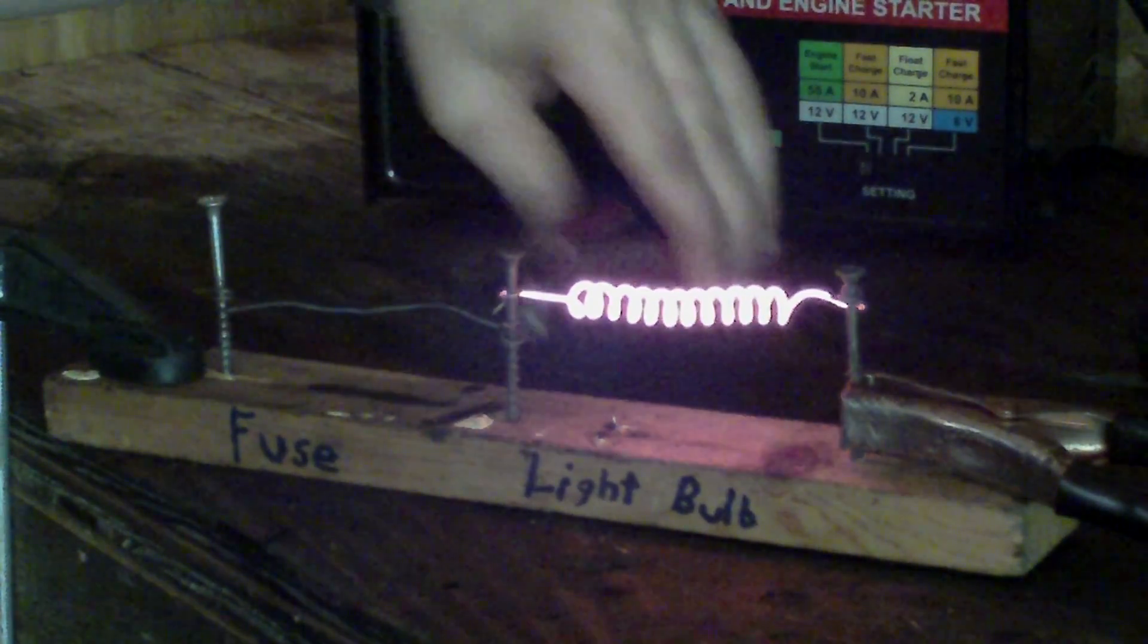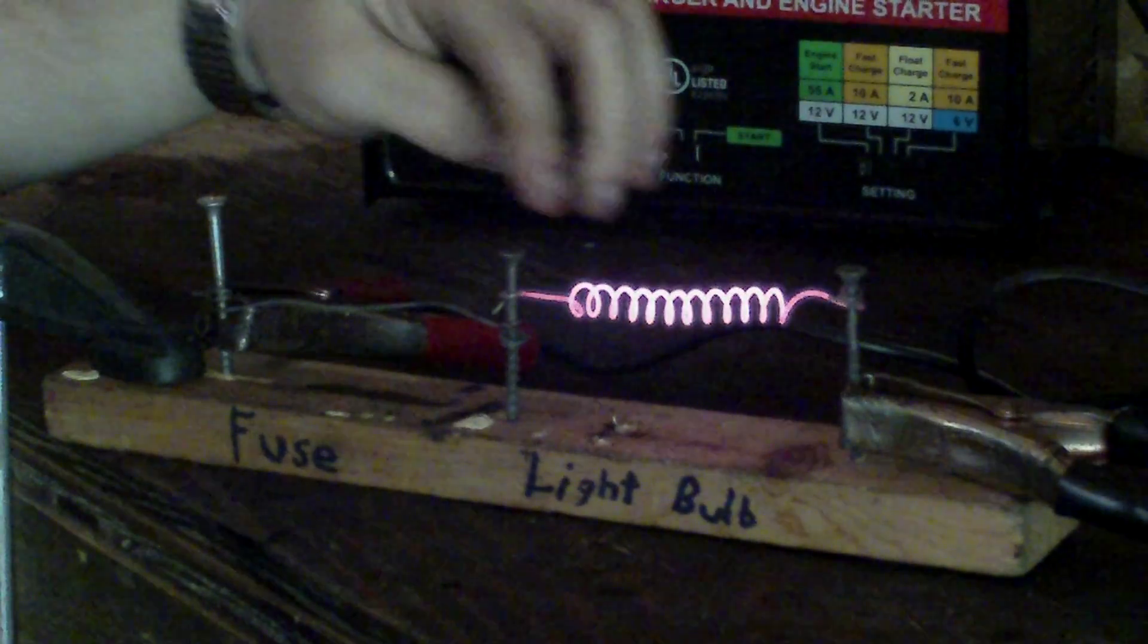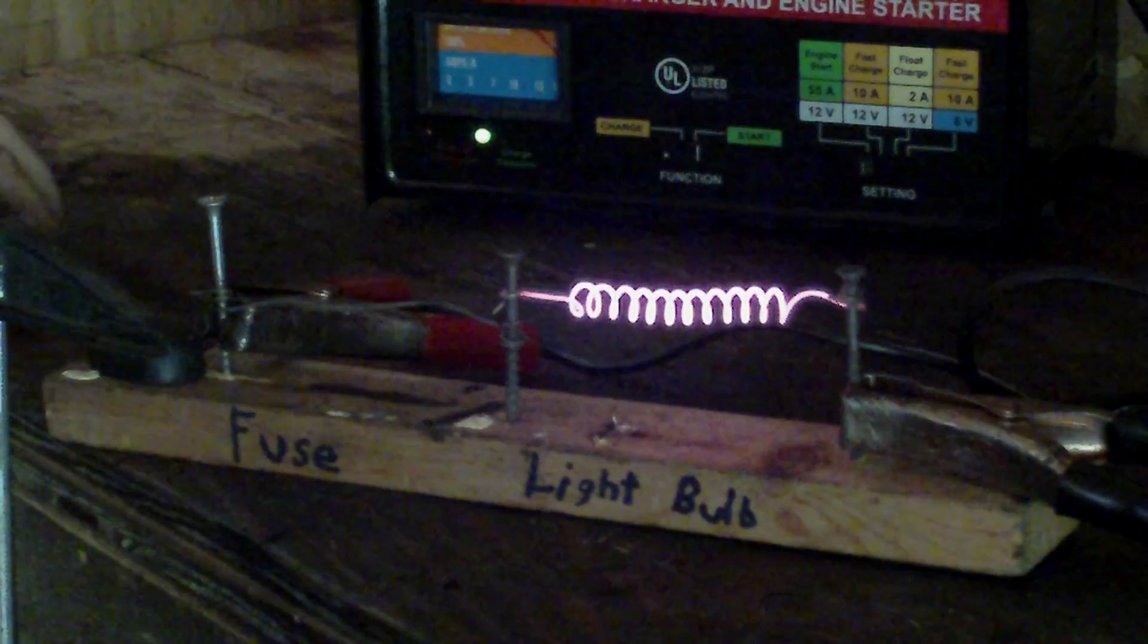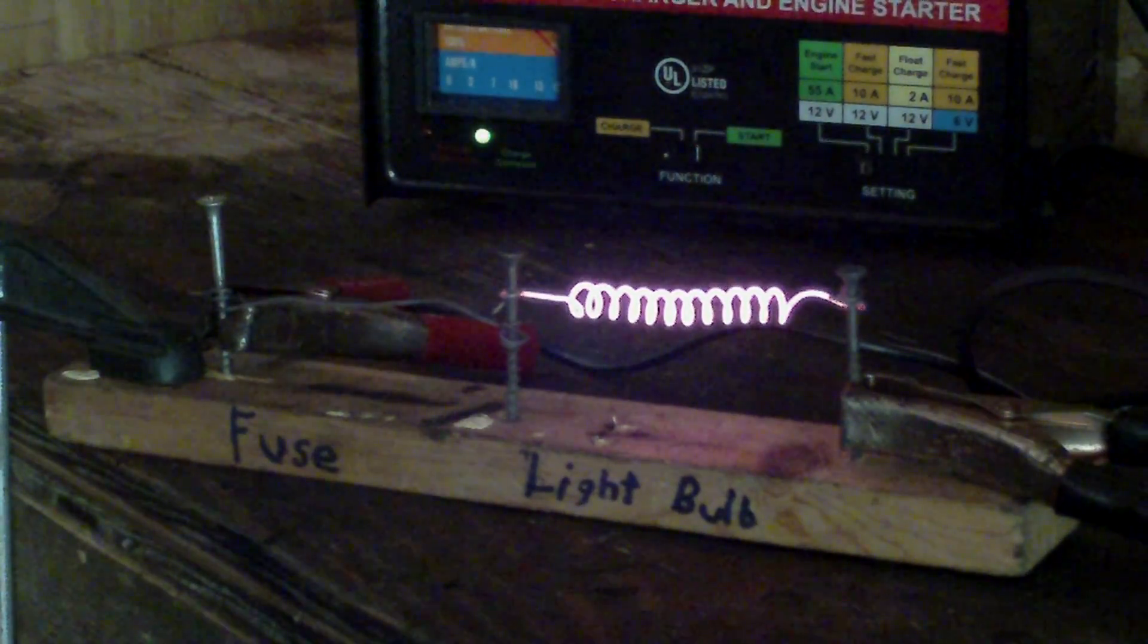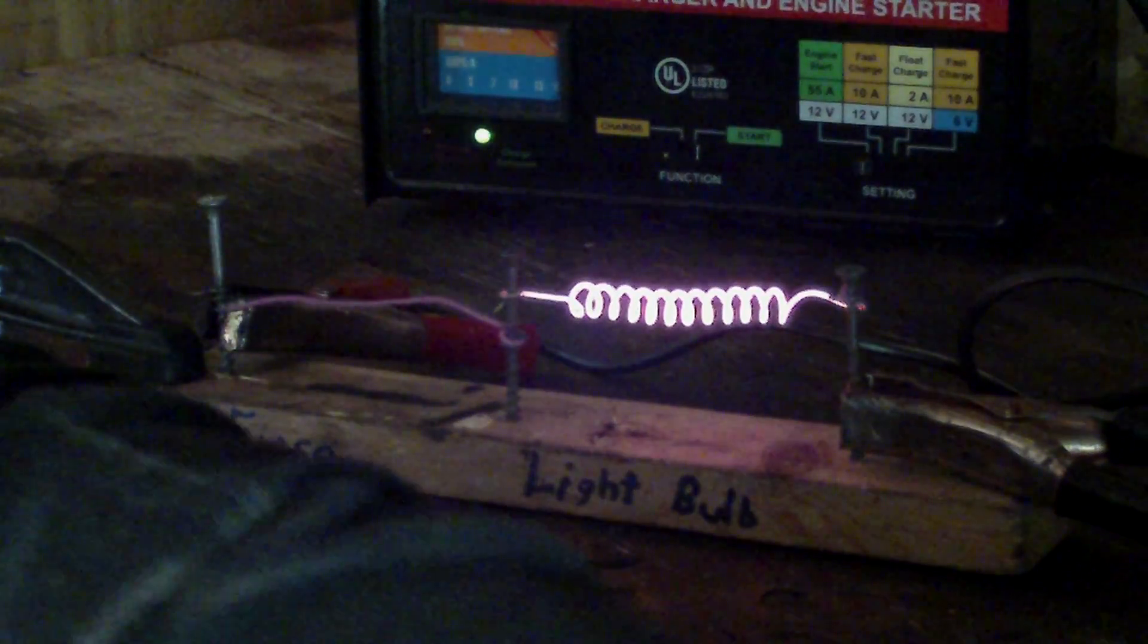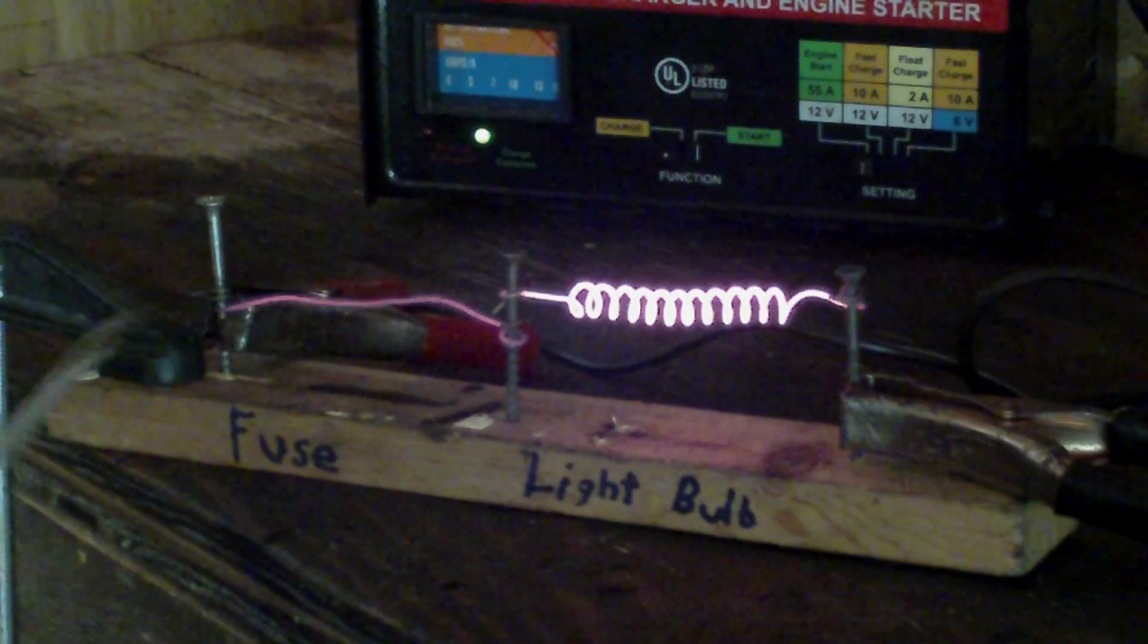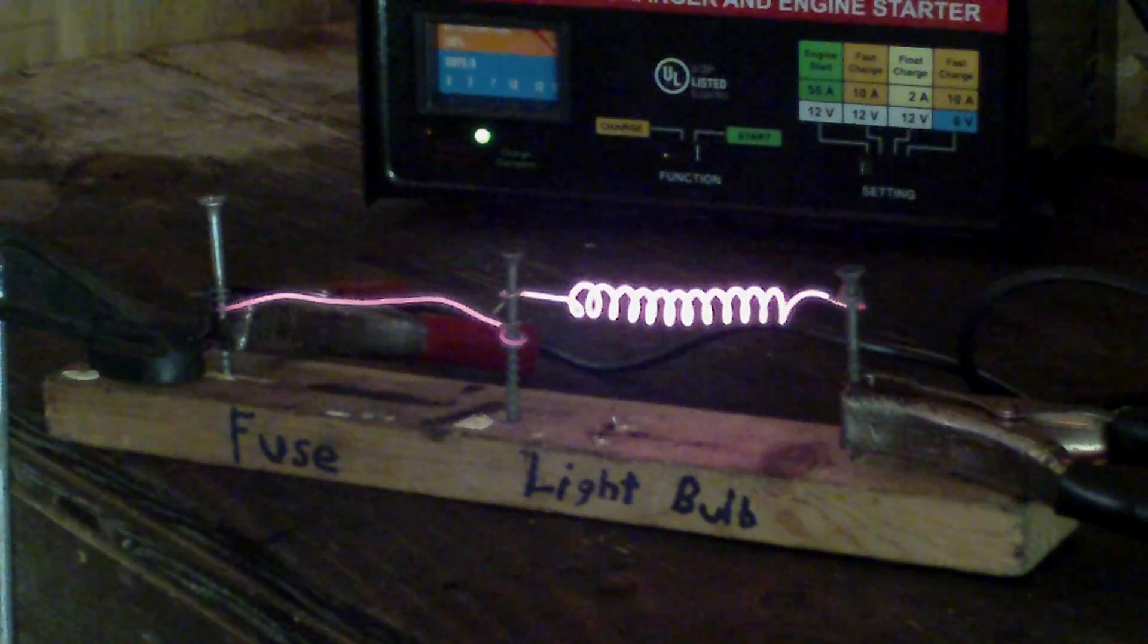Now, to demonstrate how a fuse works, I'm going to hook this smaller piece of wire plus the same size with this shorter piece. You'll notice this will glow a little bit less than this right now, because this is adding more resistance to the circuit. Now, see it's starting to glow a little bit.